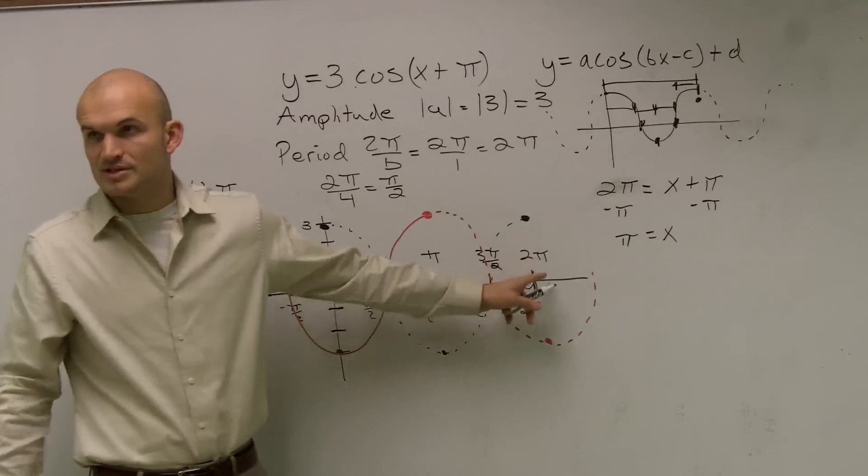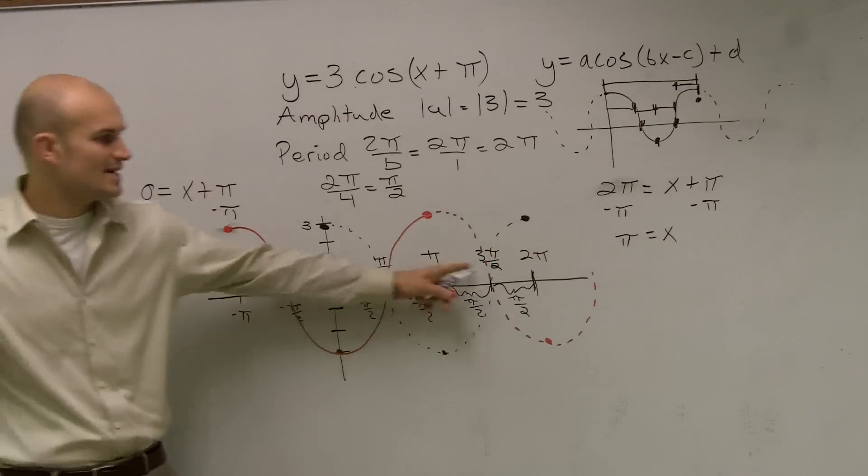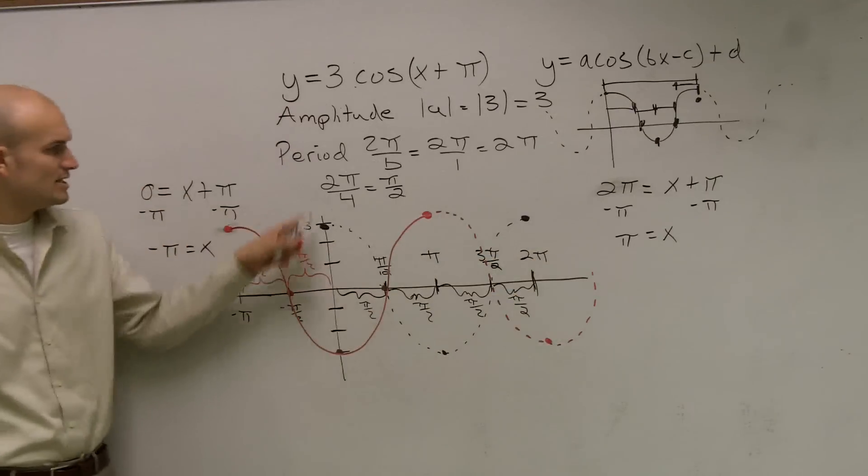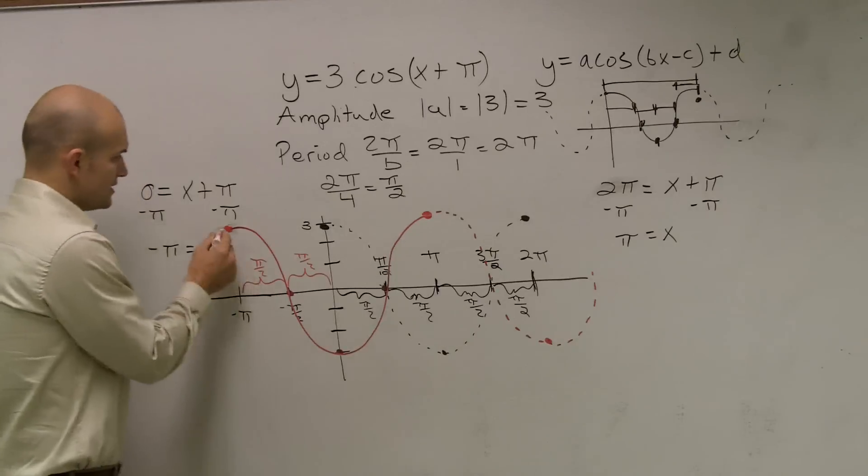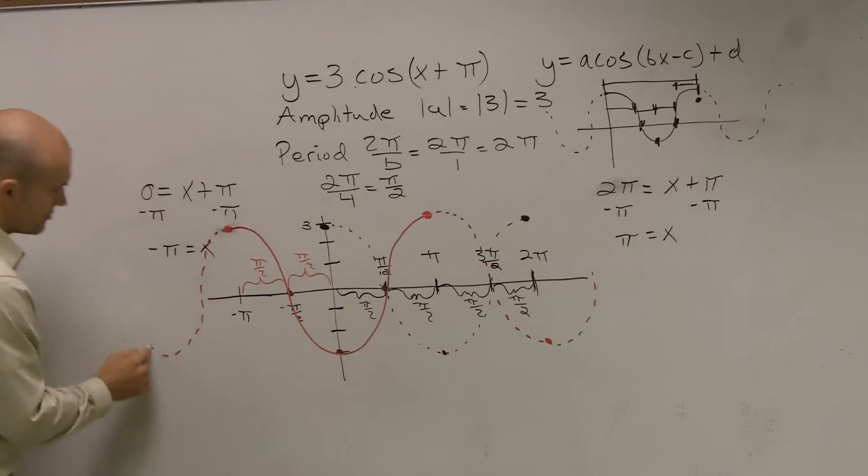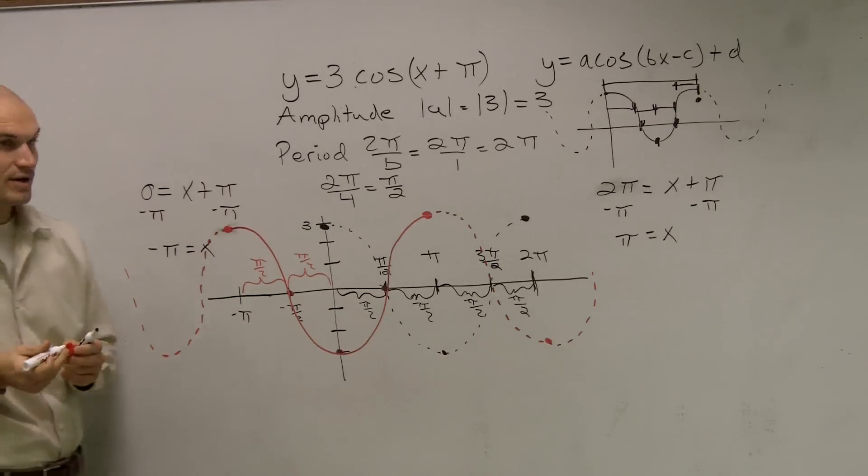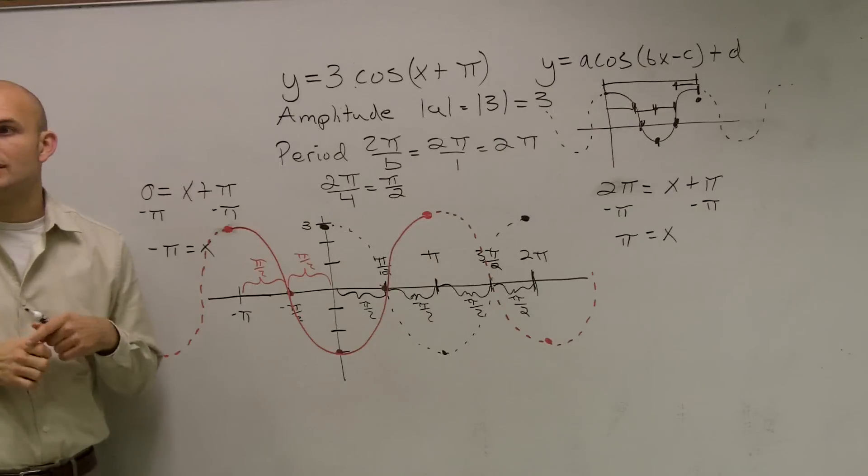And then this would be another one, which would be π over 2 plus 2π. So if you just want to keep on adding your points, just keep on adding π over 2 to every unit. And this is going to continue on forever, both to the left and to the right. Anybody have any questions on this?